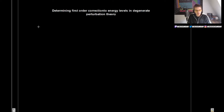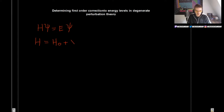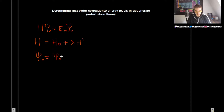Let's begin just as we did before. We want to solve the Schrödinger equation for some Hamiltonian, and we are going to consider this Hamiltonian to be some unperturbed Hamiltonian H0 plus some perturbation H'. The wave functions and the energy we will expand as a power series, just as we did before. So our Psi is going to be Psi_N0, which is the unperturbed wave function, plus Lambda Psi_N1, which is the first-order correction to the wave function.